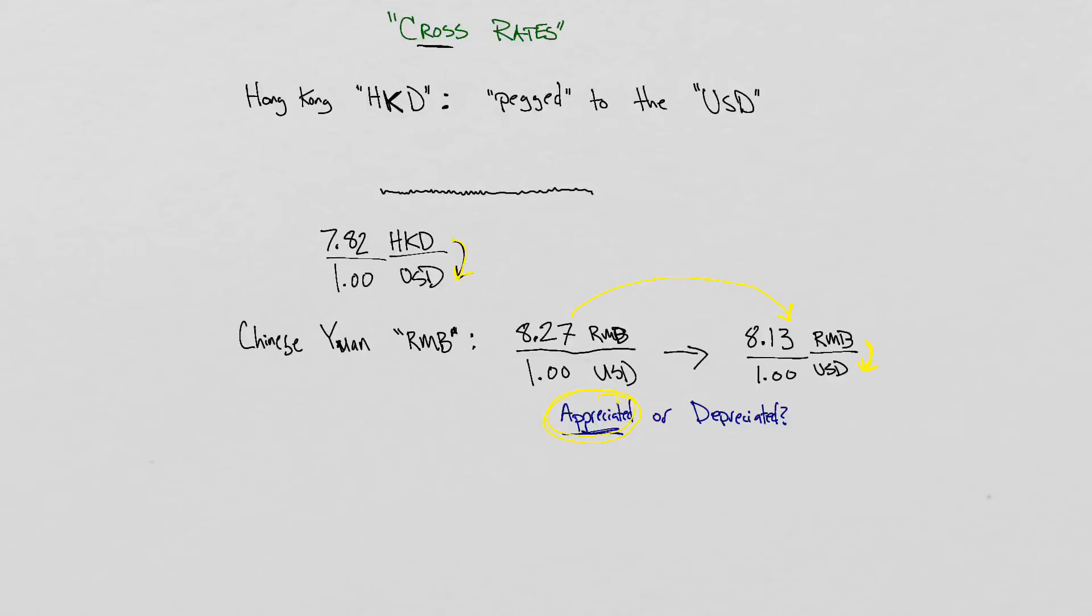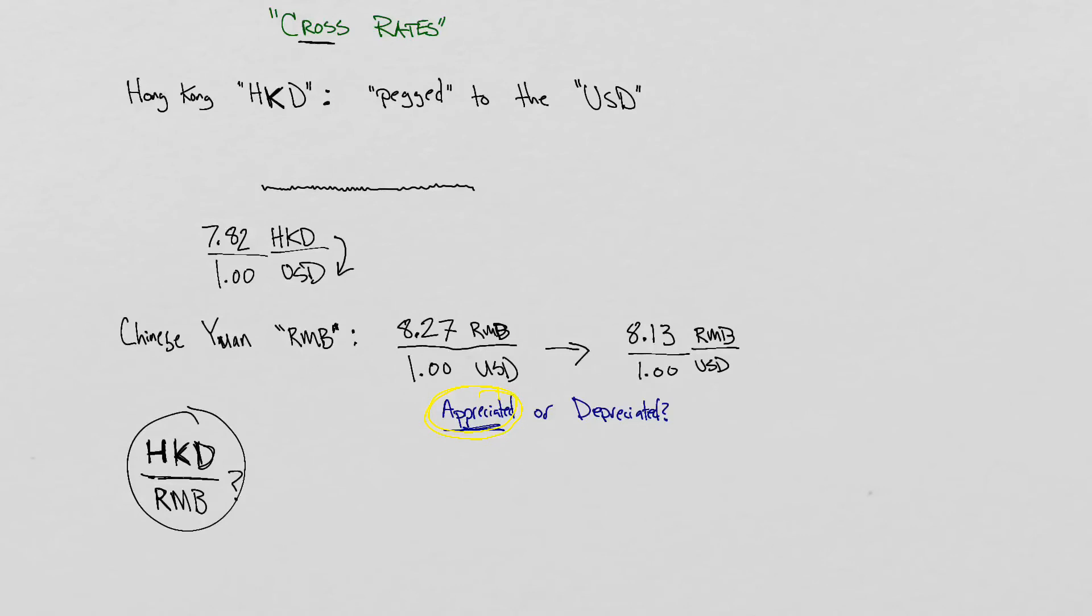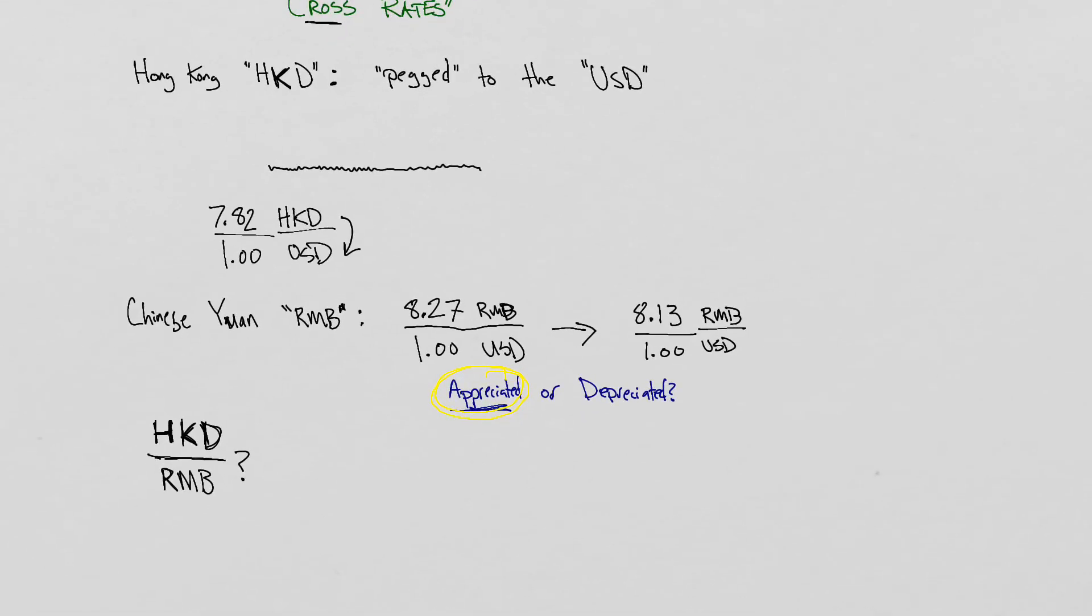So the question is, how did the value of the Hong Kong dollar change against the Chinese yuan? We want to know this number before and after the Chinese yuan, the RMB, changed. And the answer to that would be to take this number here, and notice that this one also has the same denominator. They're both against the USD. And so we can take that ratio of Hong Kong dollars to US dollar, divide that by the ratio of RMB to US dollars.